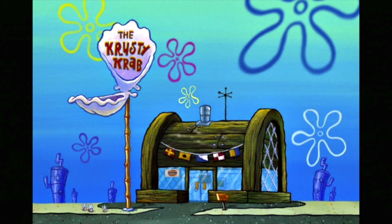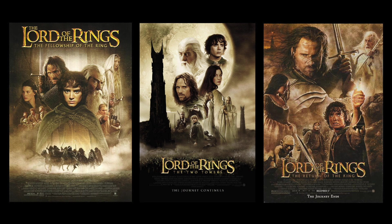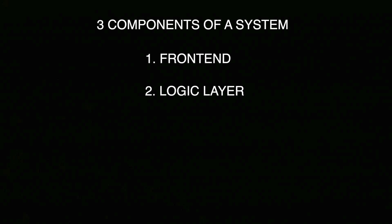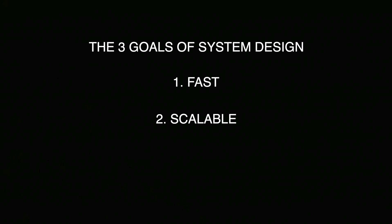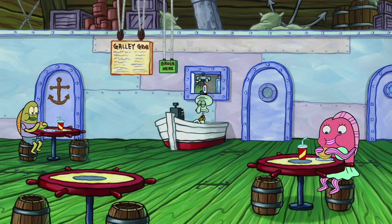Today we're going to explain system design as a restaurant. Typically in the real world, a system or an application is broken down into three parts: the front end, the logic layer, and the persistence layer. Whenever we build systems, we want our system to always be three things — fast, scalable, and resilient. Our restaurant is going to represent the system as a whole, covering all three of those layers.